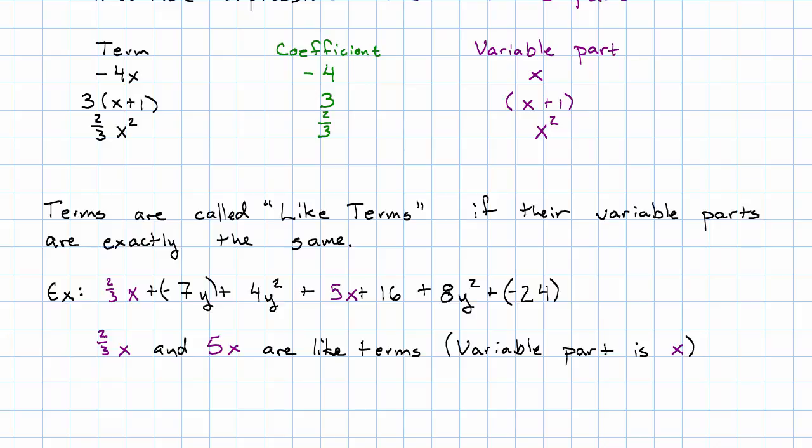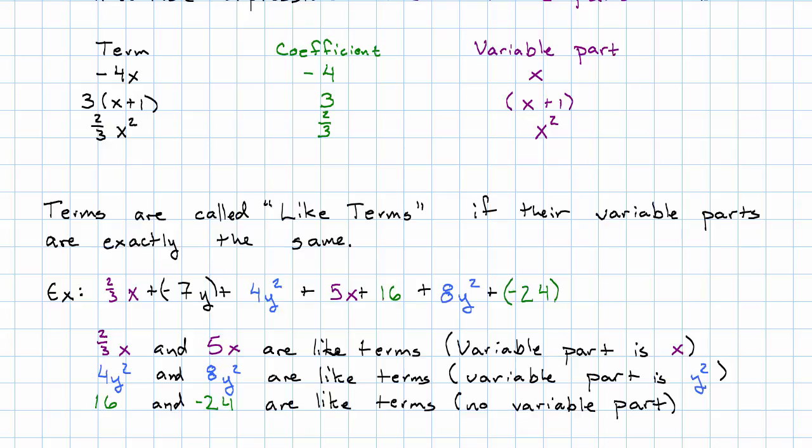Let's see, what else? 4y squared and 8y squared are like terms. Their variable part is y squared. Oh, and I guess 16 and negative 24 are like terms. They have no variable part.